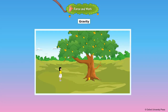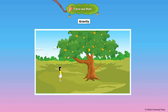The earth exerts an invisible force called gravity that pulls everything down towards it. This is called gravitational force. For example, a mango falling down from a tree is due to gravitational force.